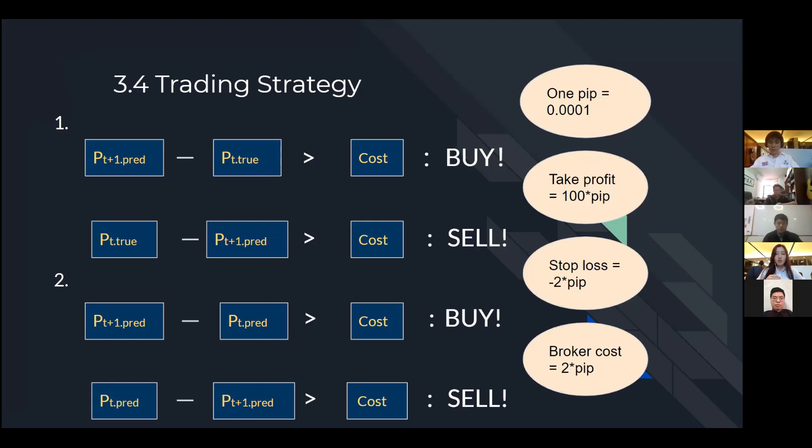Besides these criteria, we also make the stop loss and take profits to reduce the risk. If the loss is greater than 2 pips, then we sell it and stop loss. On the other hand, if the profit is higher than 100 pips, then we sell it and make the 100 pips for the profit.